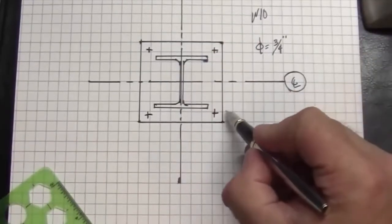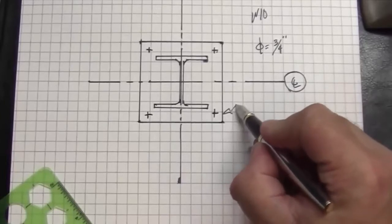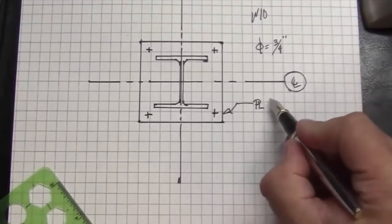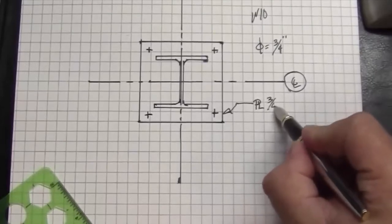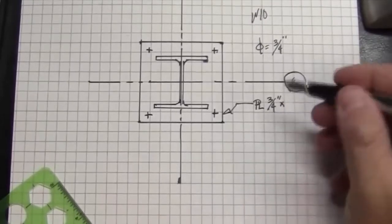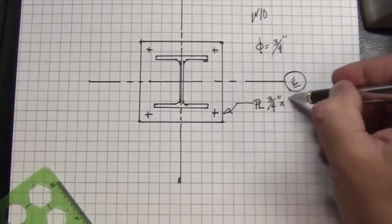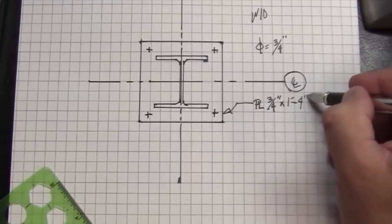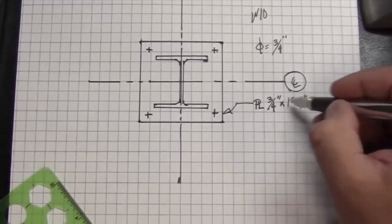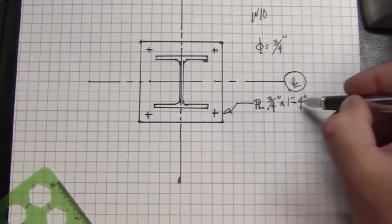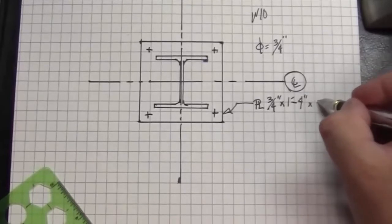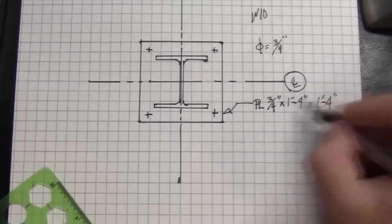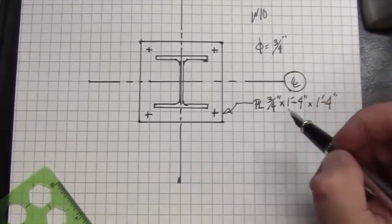To call a plate out, this is an important nomenclature. You call out the thickness of the plate first in inches by the length of the plate. In this case, one foot four inches. And then you'll call out the cut length, which is also one foot four inches. That would be for a 16 by 16 base plate.